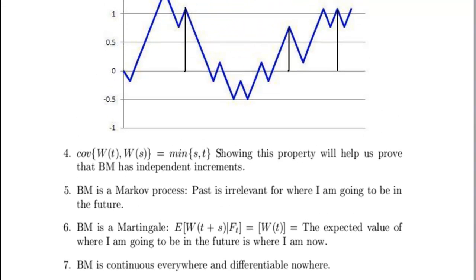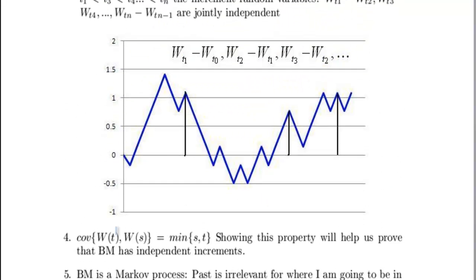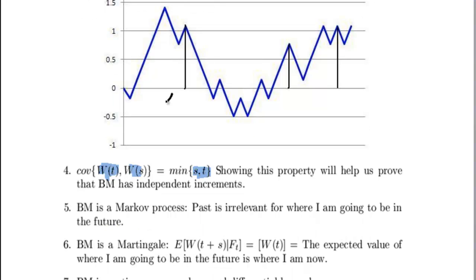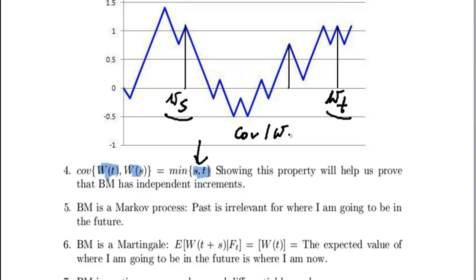The covariance of two Brownian motion paths is the minimum of times s and t. So if I look at my Brownian motion at time s and at time t, the covariance of these two terms will be the minimum of s and t. Since here s is clearly before t, the covariance of these two terms will be s.